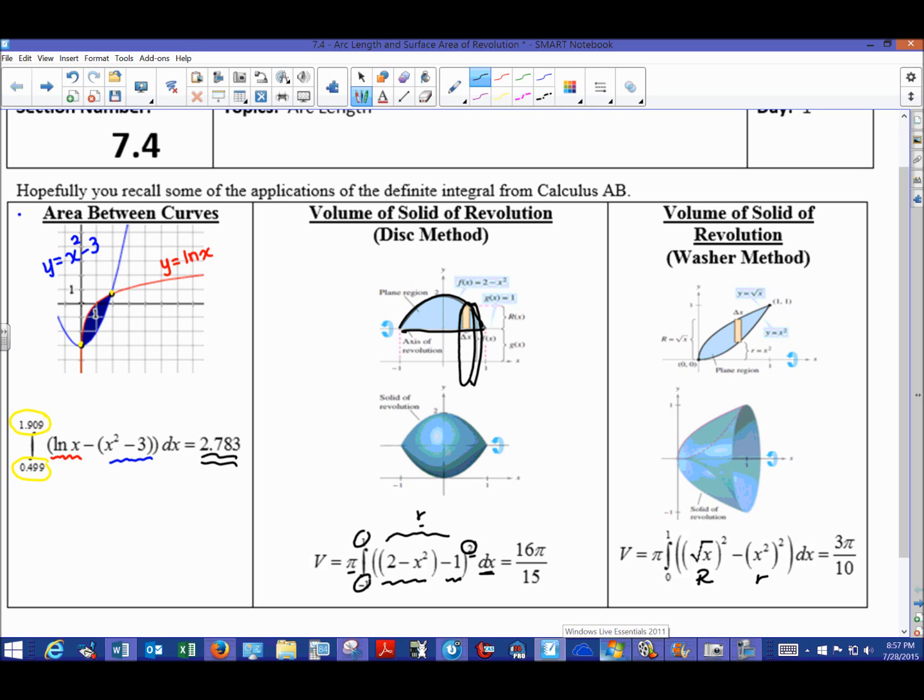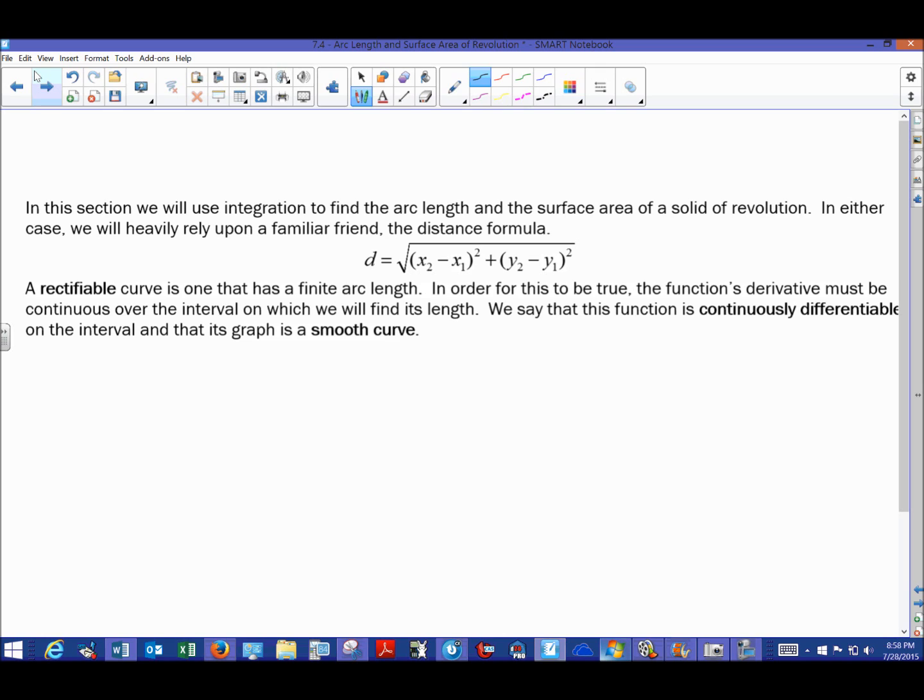Where do we go from here? Arc length is our next topic. In this section we're going to use integration to find arc length. We're going to rely on a very familiar friend, and that friend would be your distance formula. I also want to discuss what a rectifiable curve is, and that's simply a curve that does have a finite arc length. We say that a function would be continuously differentiable on the interval and that its graph would be smooth.